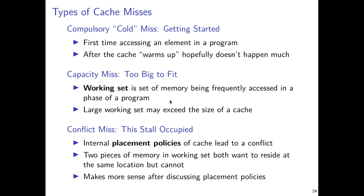A lot of programs have what's known as a working set — maybe you're working with a big piece of data overall, but at a given phase in a program you're only working with a small portion of that data. A typical example is editing a very large program file: the file may be thousands of lines long, but you tend to be editing only a few lines at a time. Those lines will end up in cache, making the editing of those lines very efficient.